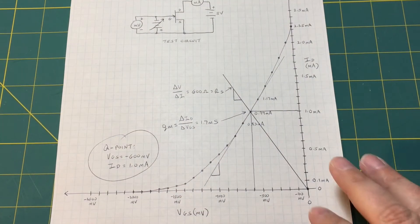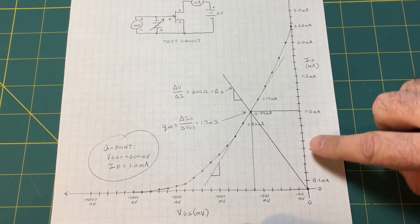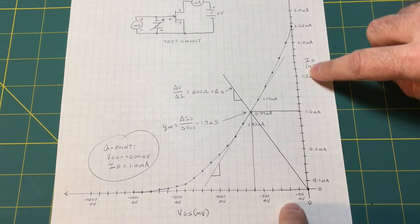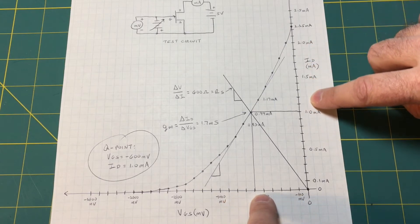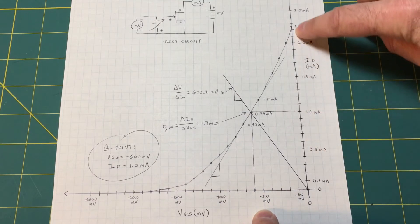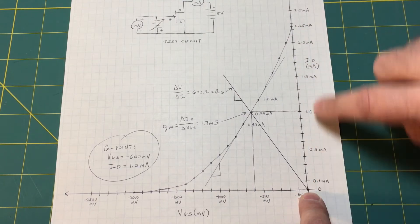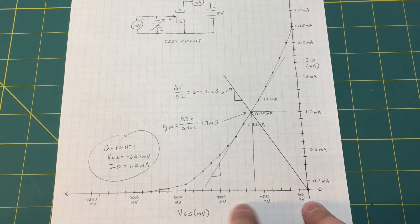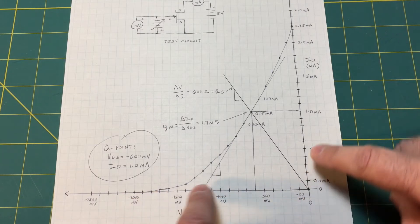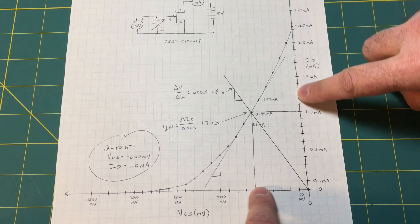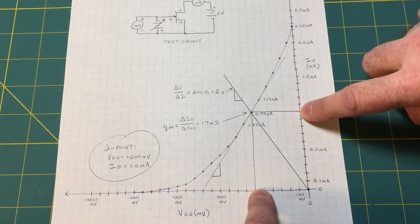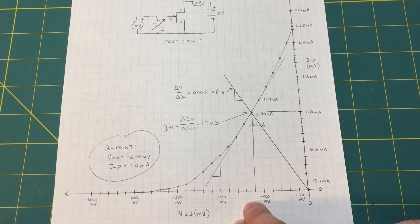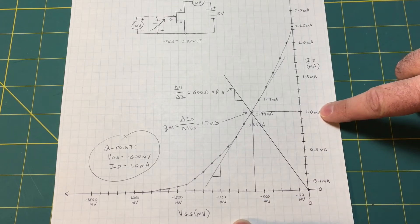You use the transconductance curve to set your Q point. With no signal coming into the circuit, you want to set your Q point in the midrange between no current and maximum current, and in the midrange between zero gate voltage and cutoff. You have to determine the sweet spot. The sweet spot I picked was minus 600 mV gate-to-source and 1 mA of drain current.